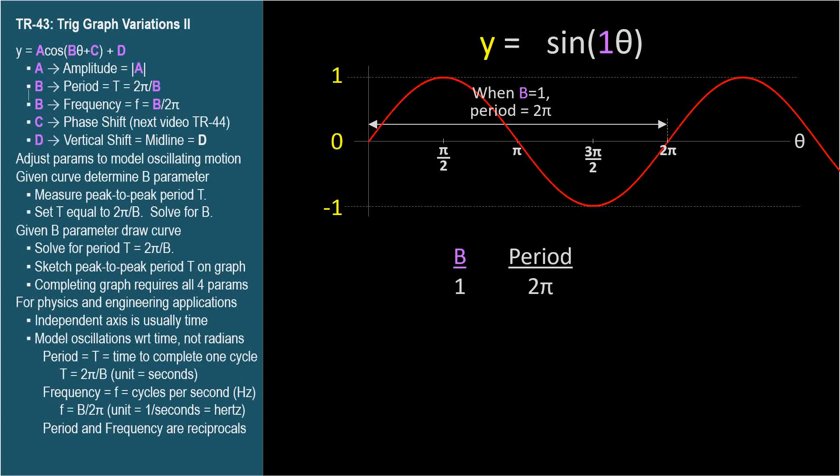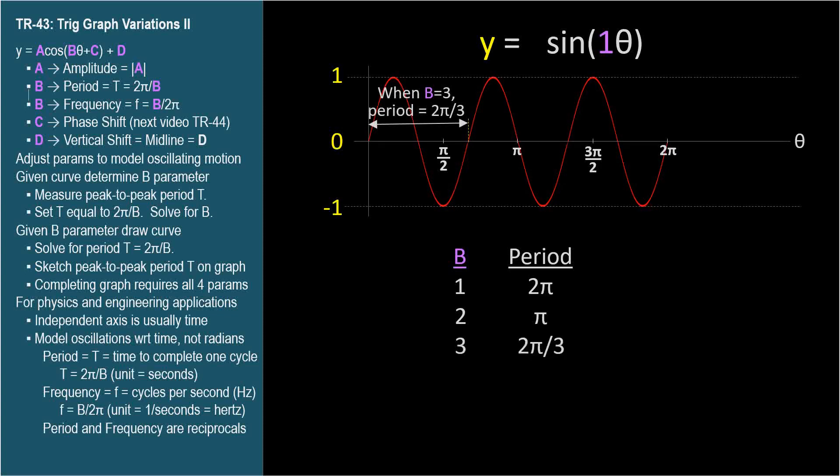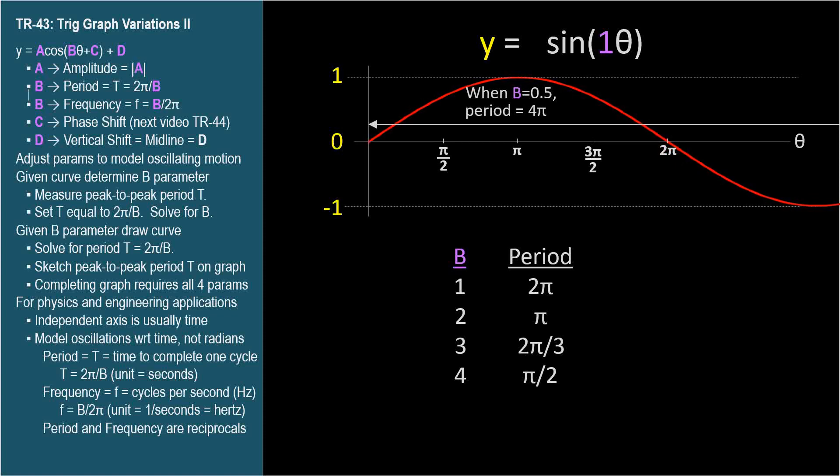When b is 2, each point for theta on the horizontal axis is plotted with the sine of the angle twice the size of theta. The effect is to compress the graph horizontally by a factor of 2. So when b equals 2, the period equals pi. When b equals 3, the period is 2 pi over 3. And when b equals 4, the period is pi over 2. Going the other way, when b is less than 1, say 0.5, the wave is stretched out horizontally. When b equals 0.5, the period is 4 pi.